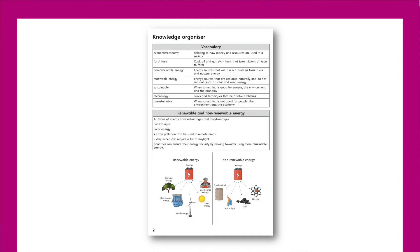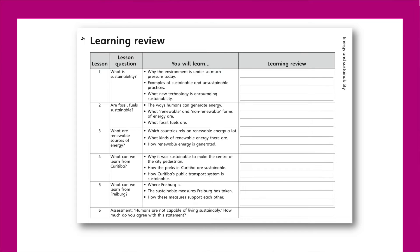In this unit pupils will have the opportunity to do just this through carefully selected case studies. The booklet begins with a knowledge organiser, including a list of geographical vocabulary and an overview of renewable and non-renewable energy sources. Each of the six lessons is framed around an enquiry question. It may be helpful to share this question at the beginning of the lesson to frame the learning, as well as ending the lesson by having pupils drop their key reflections in the learning review column.